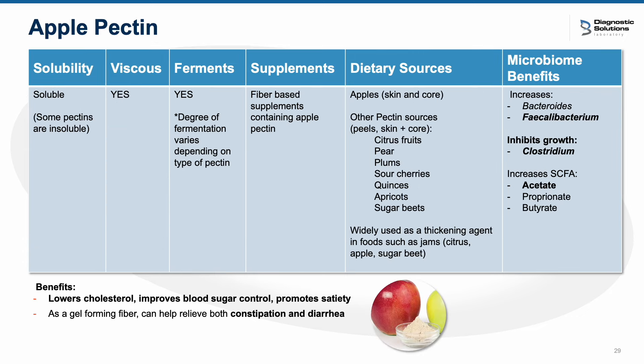There are many types of pectin fiber. Here I'm focusing on apple pectin — a soluble, viscous, and fermentable fiber, though the degree of fermentation and solubility will depend on the type of pectin used. Apple pectin is found primarily in the skin, heels, and core of fruits such as citrus, pear, apricots, sour cherries, and plums. Benefits include improving microbes like Faecalibacterium, improving SCFA production, and great benefits on blood sugar control, satiety, and cholesterol due to its viscosity and solubility.